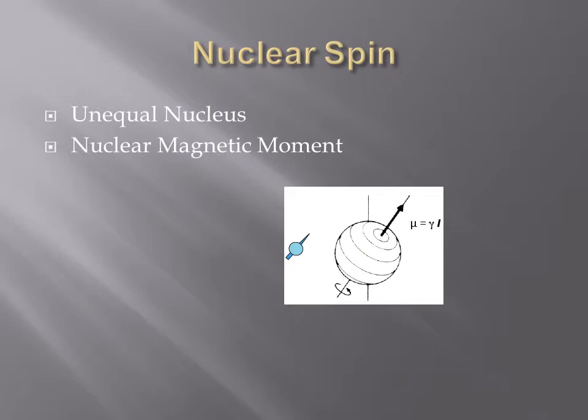The bigger the nuclear magnetic moment, the faster the spin of the nucleus in a magnetic field. So once again, spin is a property of the nucleus with unequal protons and neutrons. The unequal nucleus allows the atom to be affected by a magnetic field in a property known as nuclear magnetic moment. Now that we understand spin, I will ask again: what does it mean to follow a magnetic field, and how does a nucleus have resonance?